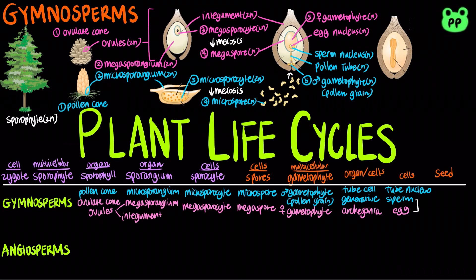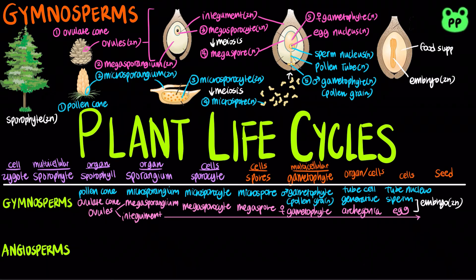Megaspores develop into female gametophyte through mitosis. The female gametophyte produces egg in archegonia. After pollination, the sperm fertilizes the egg to produce the diploid zygote, which is surrounded by food and a protective seed coat derived from the integument.